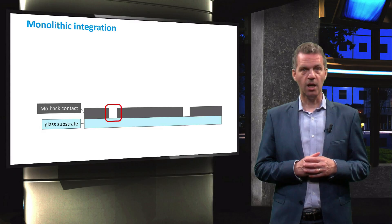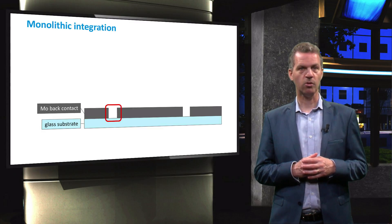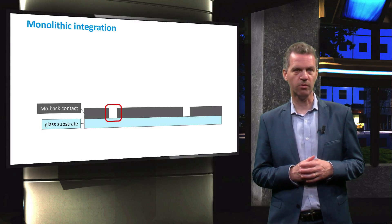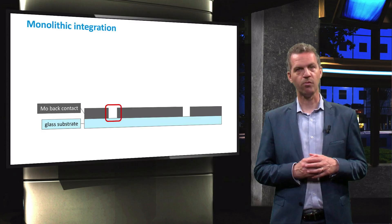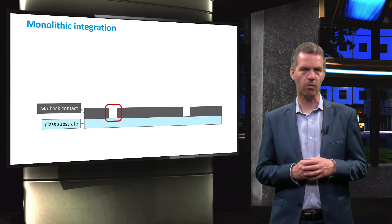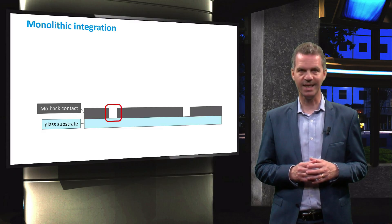The interconnection between CIGS solar cells is achieved by monolithic integration, as was also discussed previously in the video series on thin film technologies. Usually, separate solar cells in lateral direction are made by scribing the layers, most often by using an absorbing laser.